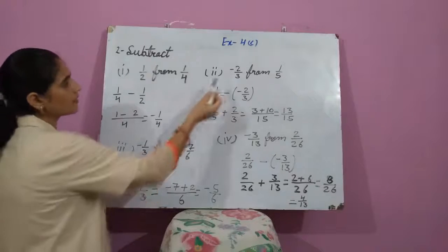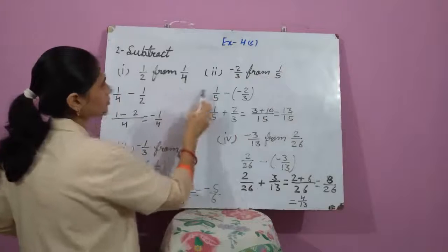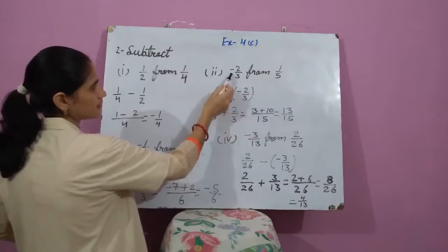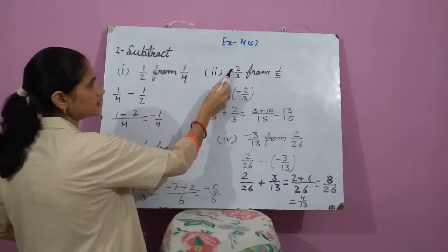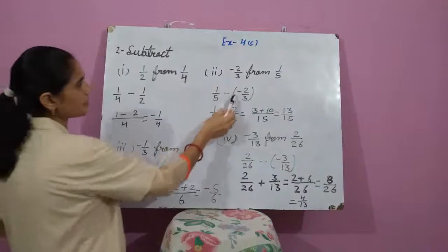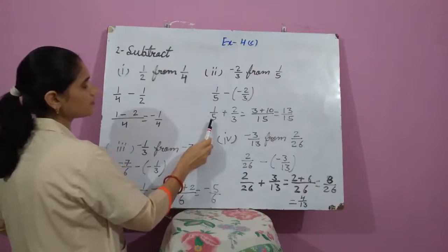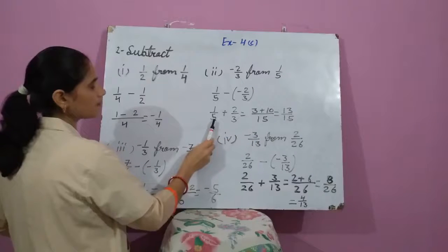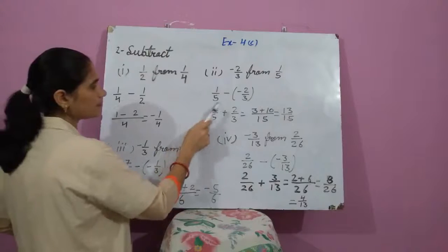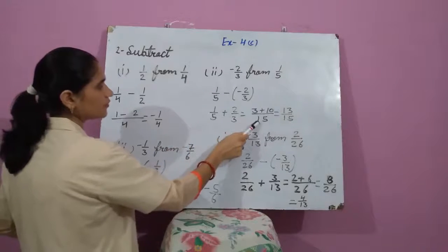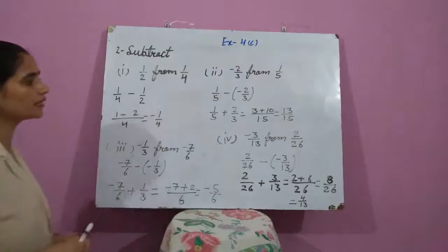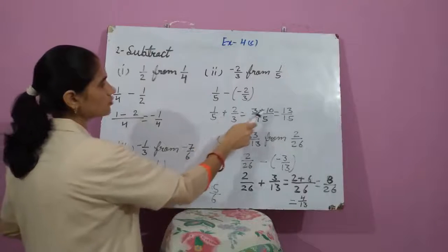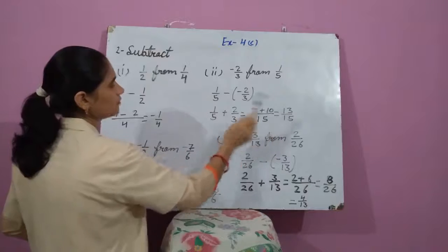Come to the second part: minus 2 upon 3 from 1 upon 5. This gives 1 upon 5 minus (minus 2 upon 3). Because this rational number has a minus sign, minus minus becomes plus. After this we find the LCM of 5 and 3, that is 15. Then 15 divided by 5 is 3, and 3 multiplied by 1 is 3; plus 15 divided by 3 is 5, and 5 multiplied by 2 is 10. So 3 plus 10 gives 13 upon 15.